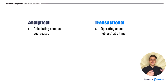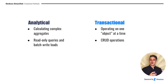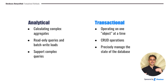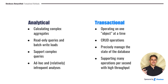So to summarize: in the analytical world, we're talking about calculating complex aggregates, whereas in the transactional world, we're really only operating on one object at a time. In the analytical world, we're mostly doing read-only queries with occasional batch write jobs. In the transactional world, the whole game is about doing those CRUD operations — create, read, update, delete — very efficiently. In the analytical world, we need to support really complex queries, whereas in the transactional world, we want to manage the state of the database very precisely, with sophisticated guarantees about exactly what has or hasn't been saved. Finally, in the analytical world, we're supporting ad hoc and relatively infrequent analyses, whereas in the transactional world, we need to support many operations per second with very high throughput.